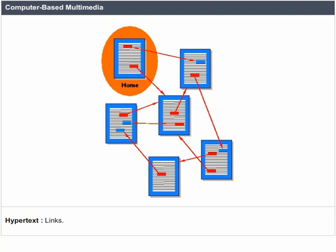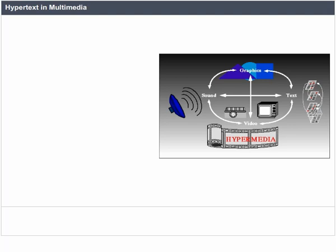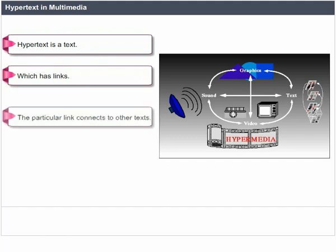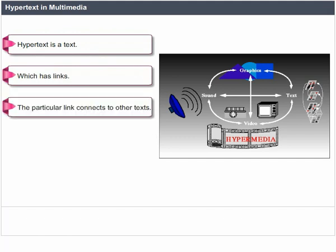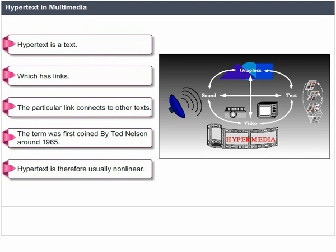Hypertext refers to links. Hypertext in multimedia is text which has links — the particular links connect to other texts. The term was first coined by Ted Nelson around 1965. Hypertext is therefore usually non-linear.